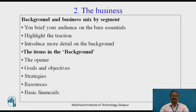Second — the business. In the business section, we will have a background and business mix by segment. Brief your audience on the bare essentials: what it does, for whom, why, where, with whom, with what. Highlight the traction — traction means having a measurable set of customers or users that serves to prove to a potential investor. Introduce more detail on the background to your business than you set out in the executive summary. Remember that your plan should be a short, sharp, punchy document aimed at hooking your audience — this is where the reader is introduced to the business and what makes it tick.